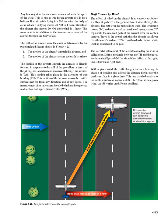The path of an aircraft over the earth is determined by two factors: 1. the motion of the aircraft through the airmass, and 2. the motion of the airmass across the earth's surface. The motion of the aircraft through the airmass is directly forward in response to the propellers or jet engines, and its rate of movement through the airmass is TAS. This motion takes place in the direction of true heading (TH). The motion of the airmass across the earth's surface is called wind, expressed in direction and speed — wind vector (W/V).